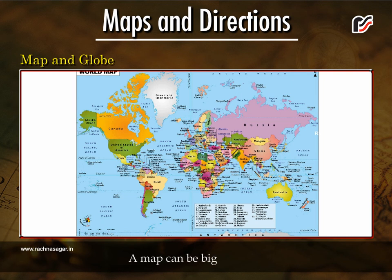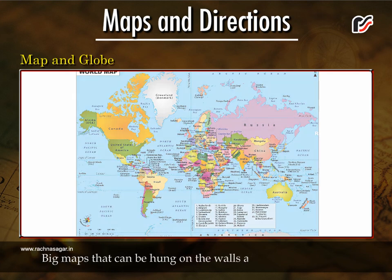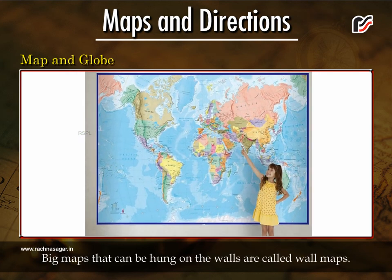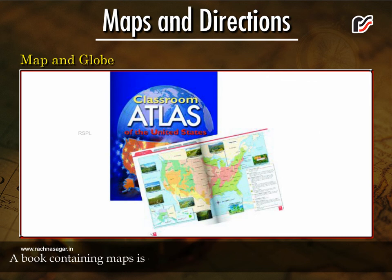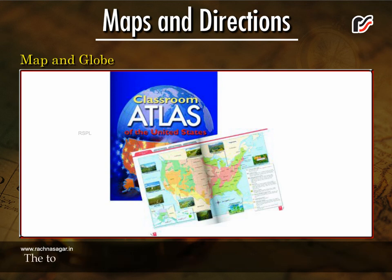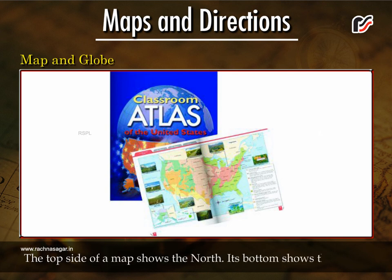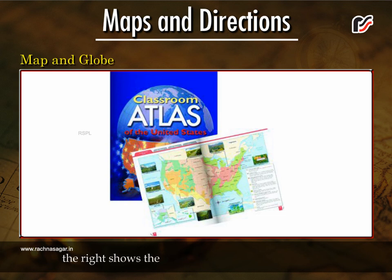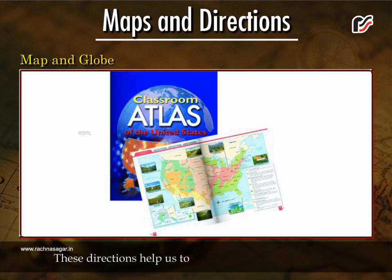A map can be big or small. Big maps that can be hung on the walls are called wall maps. A book containing maps is called an atlas — it contains a lot of information. The top side of a map shows the north, its bottom shows the south, the right shows the east, and the left shows the west. These directions help us to locate the places on the map.